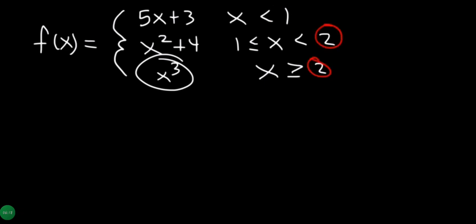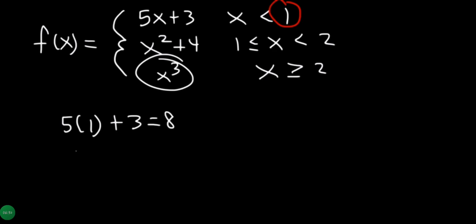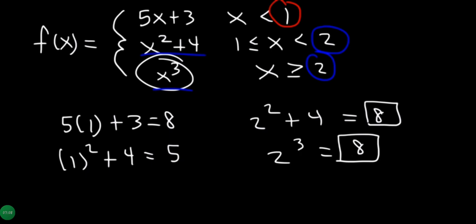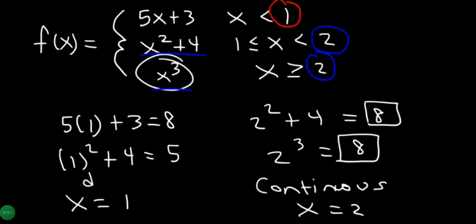We will check continuity in general. When x approaches the boundary, we check if limits from both sides match. At x equals 2, we check whether the function is continuous or discontinuous at that point.